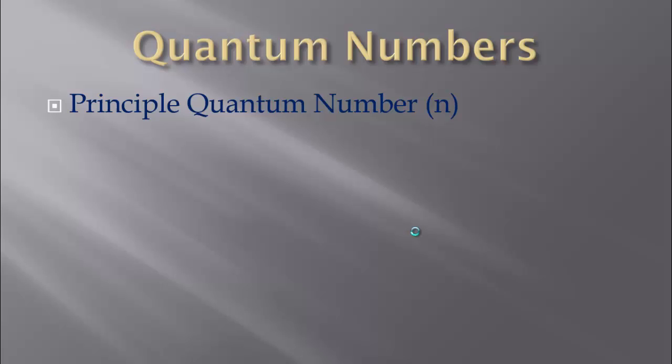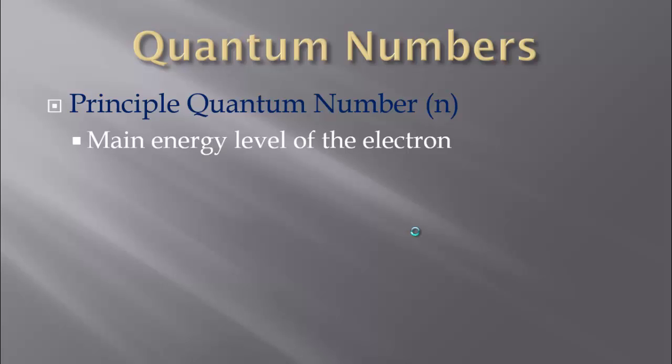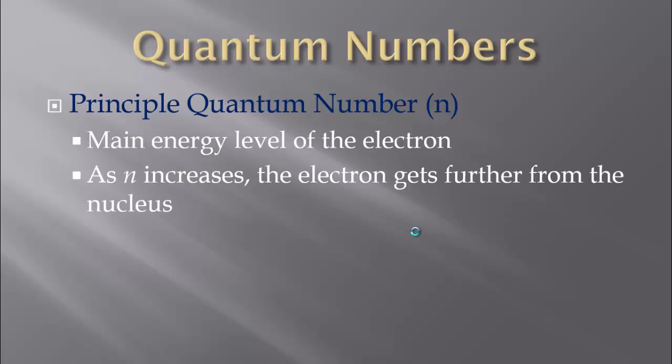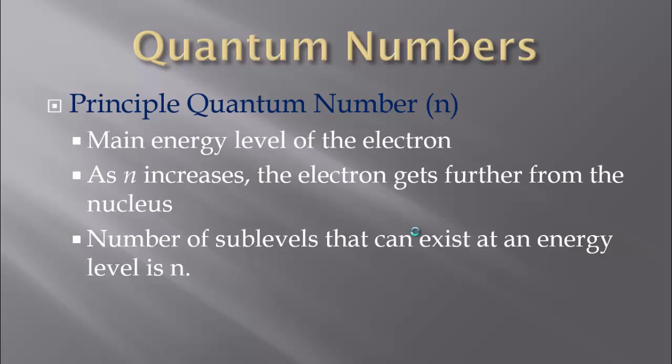The first one is the principal quantum number, which is N. This is the main energy level of the electron — where it is, or, thinking of Bohr's model, how far out from the nucleus the electron is located. This is the main energy level of the electron: where does it most likely reside? What is its ground state? As N increases, the electron gets further from the nucleus. The number of sublevels that can exist at an energy level is N. So if we are in the first energy level, we have one sublevel; if we are in the second energy level, we have two sublevels, and so forth.